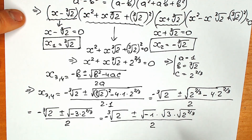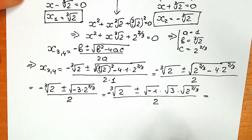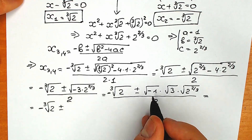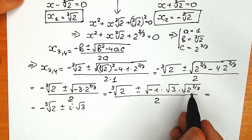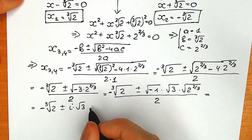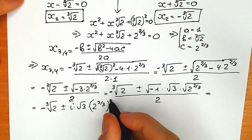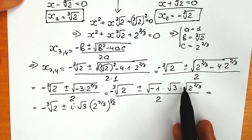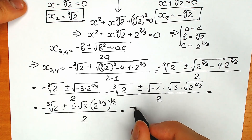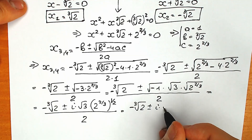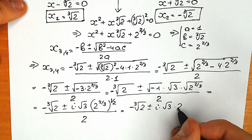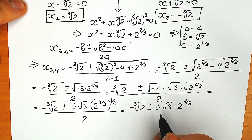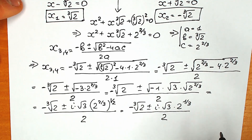Square root of minus 1 is our imaginary unit i. So we have minus cube root of 2 plus or minus i times square root of 3 times 2 to the power two-thirds raised to the one-half power, divided by 2. Multiplying the exponents: two-thirds times one-half equals one-third, so 2 to the power two-thirds to the one-half equals 2 to the power one-third. We divide by 2, so we split our real and imaginary parts.